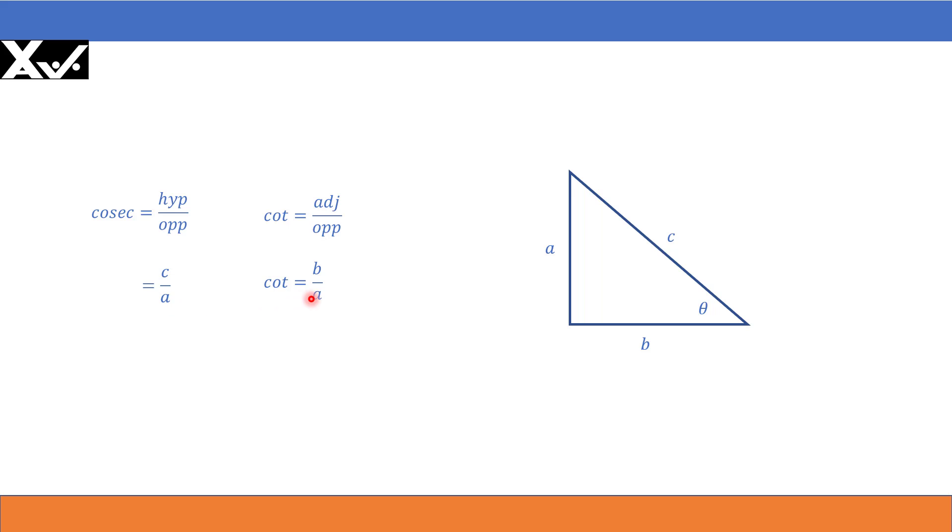Both for cosecant and cot, the denominator is the same. And the numerator, C is always greater than B. We already know. Therefore, C by A will always be greater than B by A and therefore, cosecant is always greater than cot.